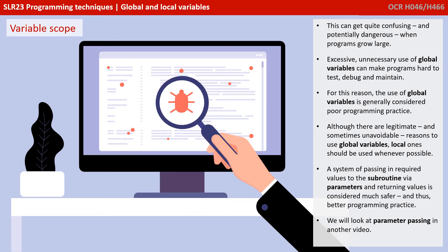This can get quite confusing and potentially dangerous, especially when programmes grow very large. Excessive and unnecessary use of global variables can make programmes hard to test, debug and maintain. For this reason, the use of global variables is generally considered poor programming practice. Although there are legitimate and sometimes unavoidable reasons to use global variables, local ones should be used whenever possible. A system of passing in required values to the subroutine via parameters and returning values is considered much safer and thus better programming practice.